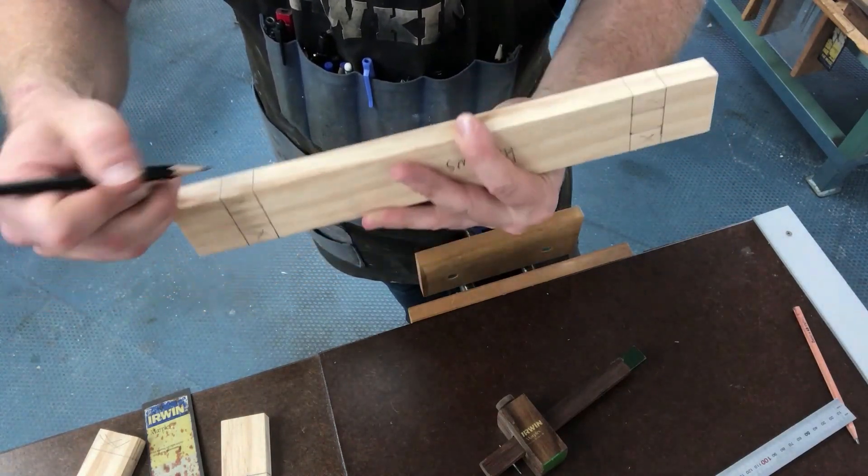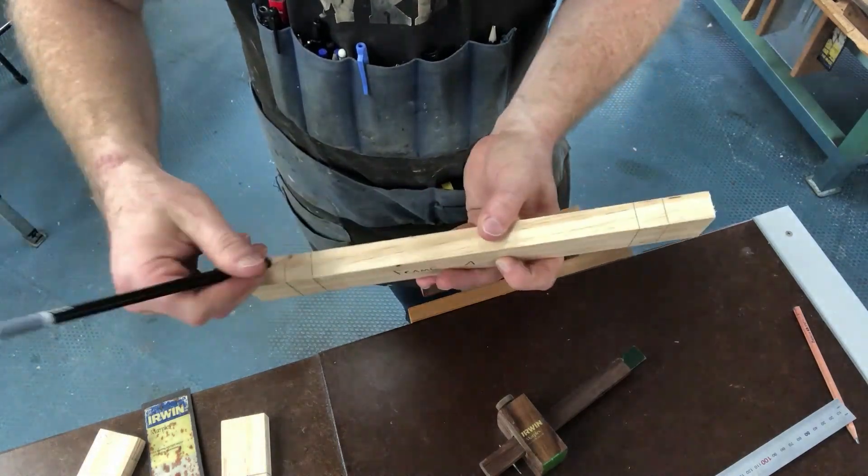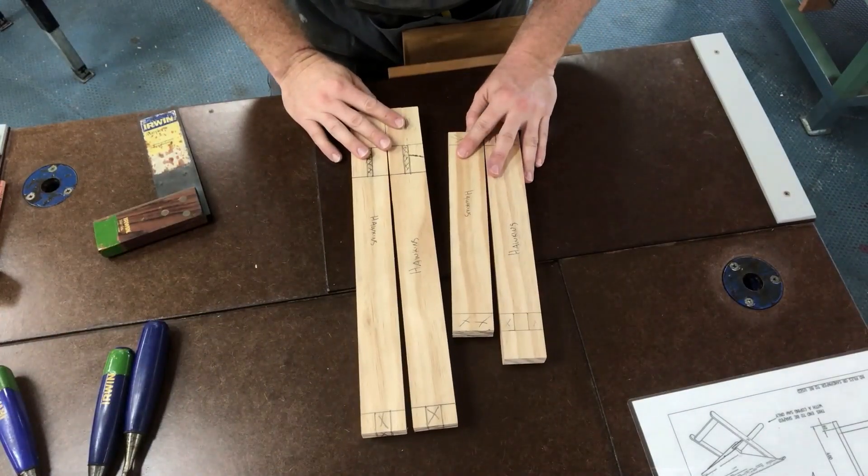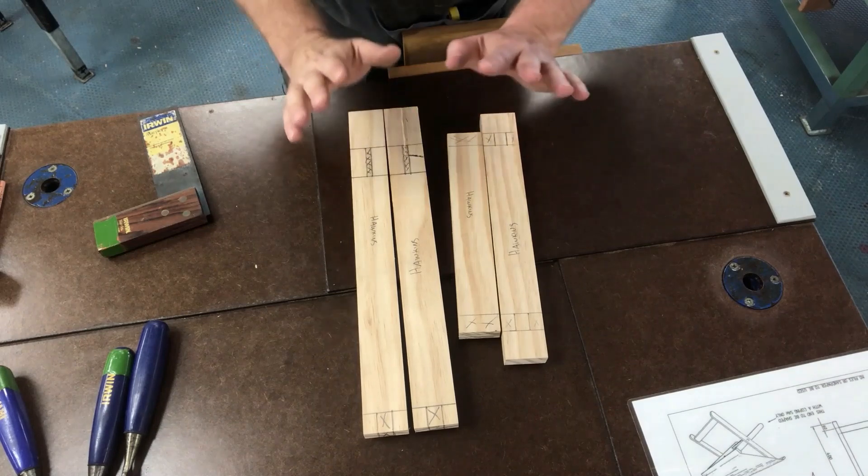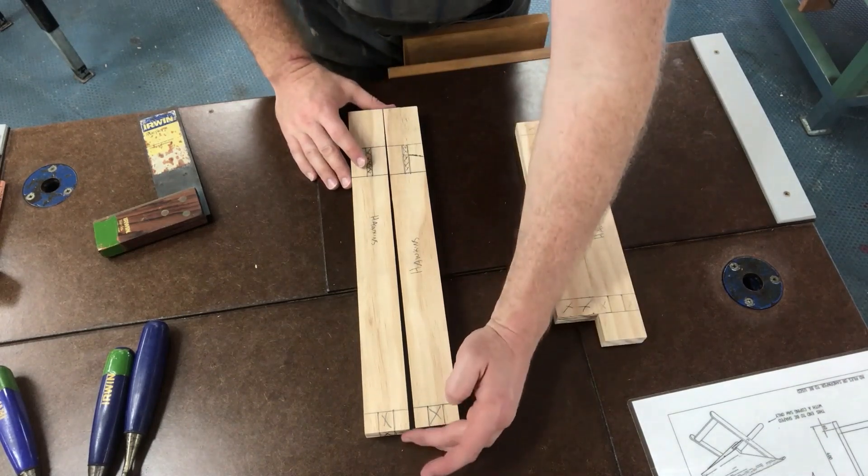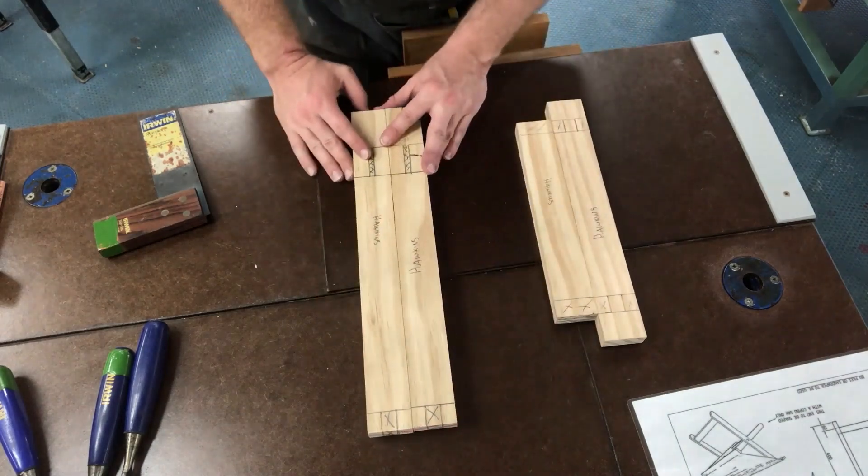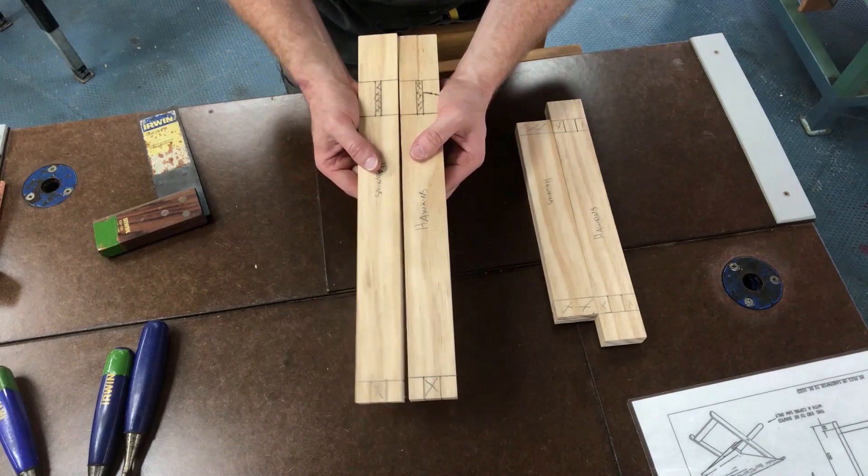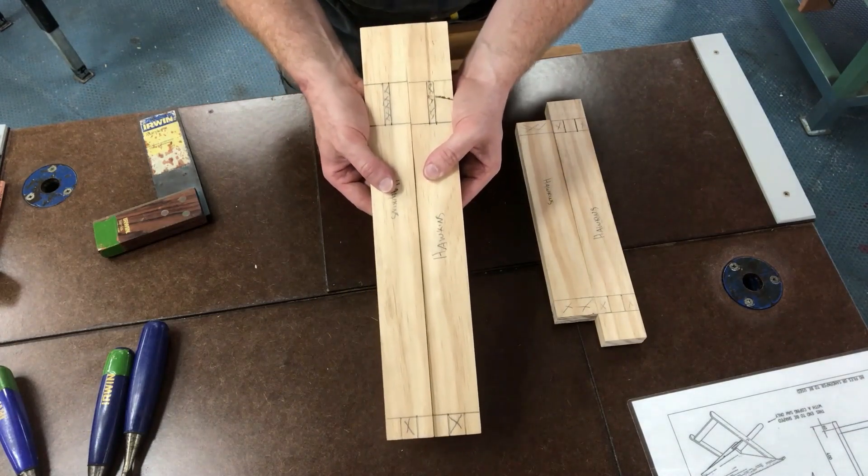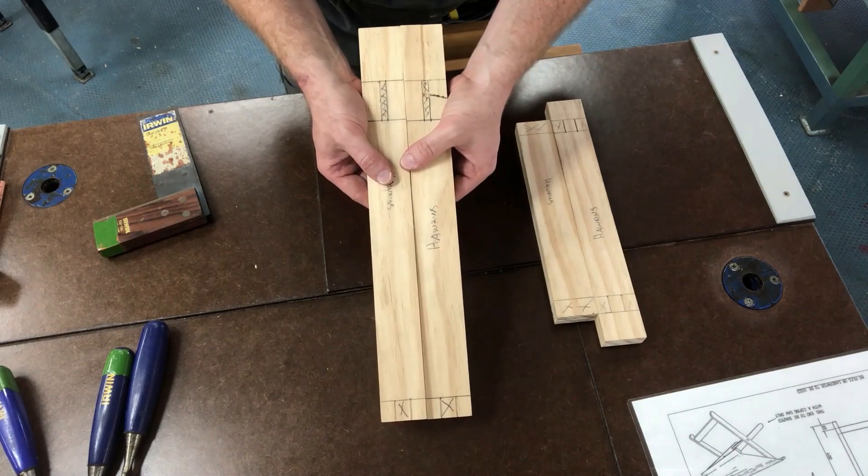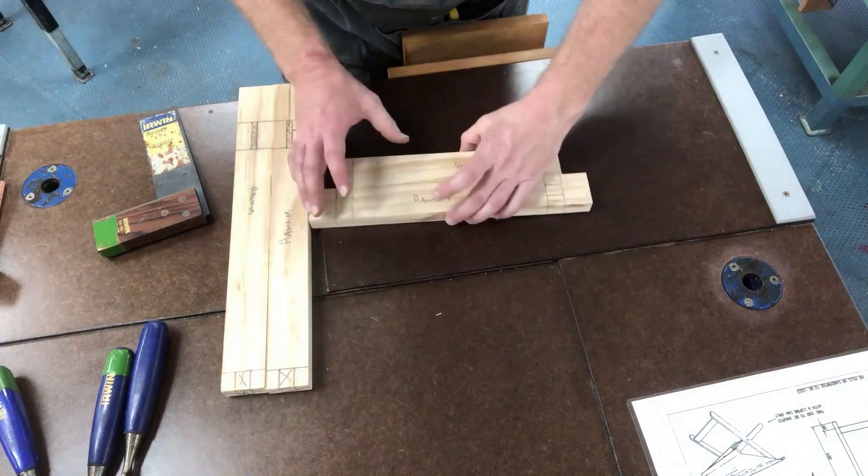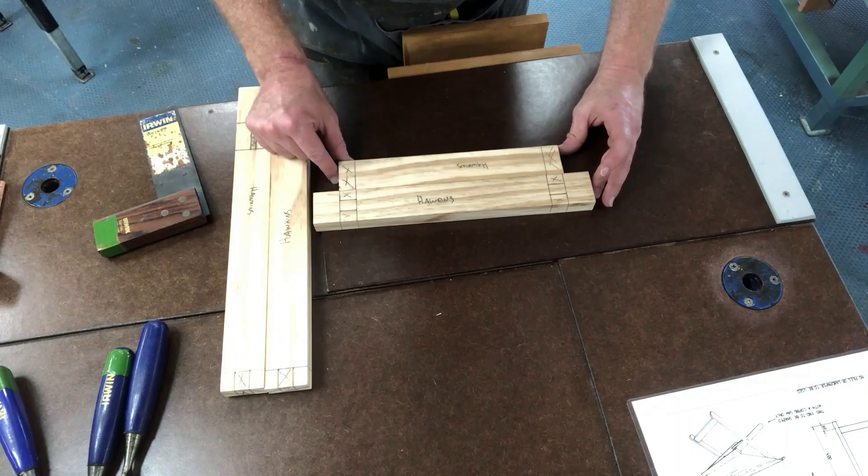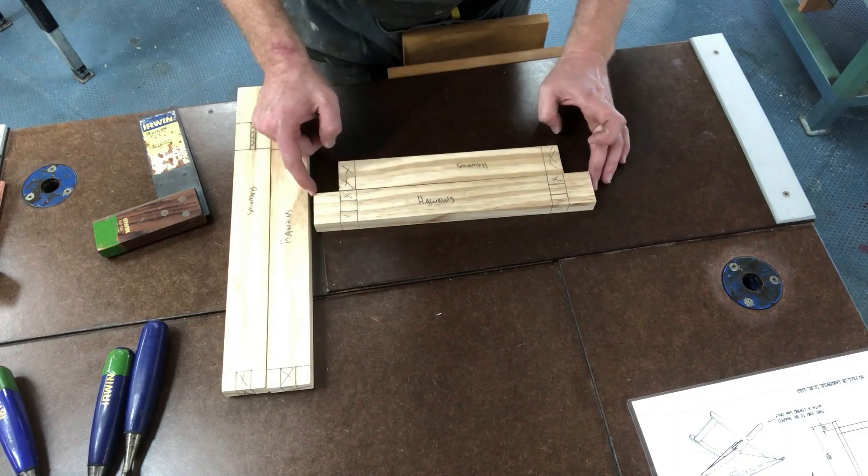And just mark your waste - so the waste is the section that we're going to cut out. That's all the marking out that you should need to do for frame A. A couple of things before we move on: just double check that all of your lines match up on both of your legs. Very important. If it doesn't match up, it's easier to fix now before you've cut anything out. You can just simply rub out your marks and redo them.